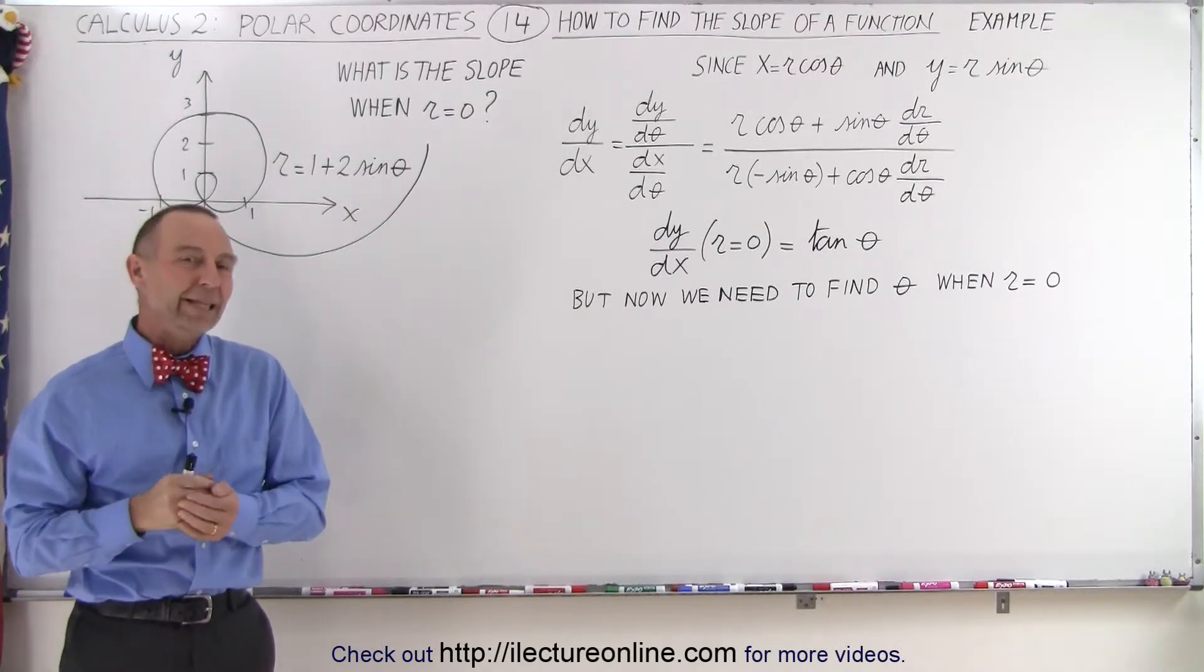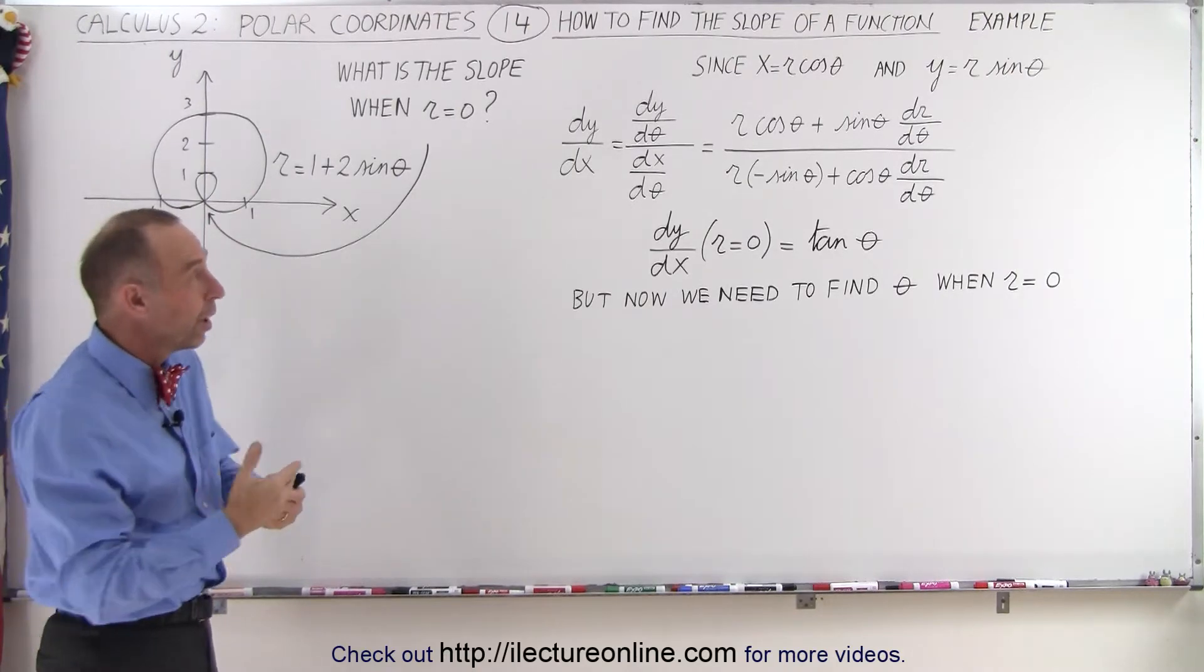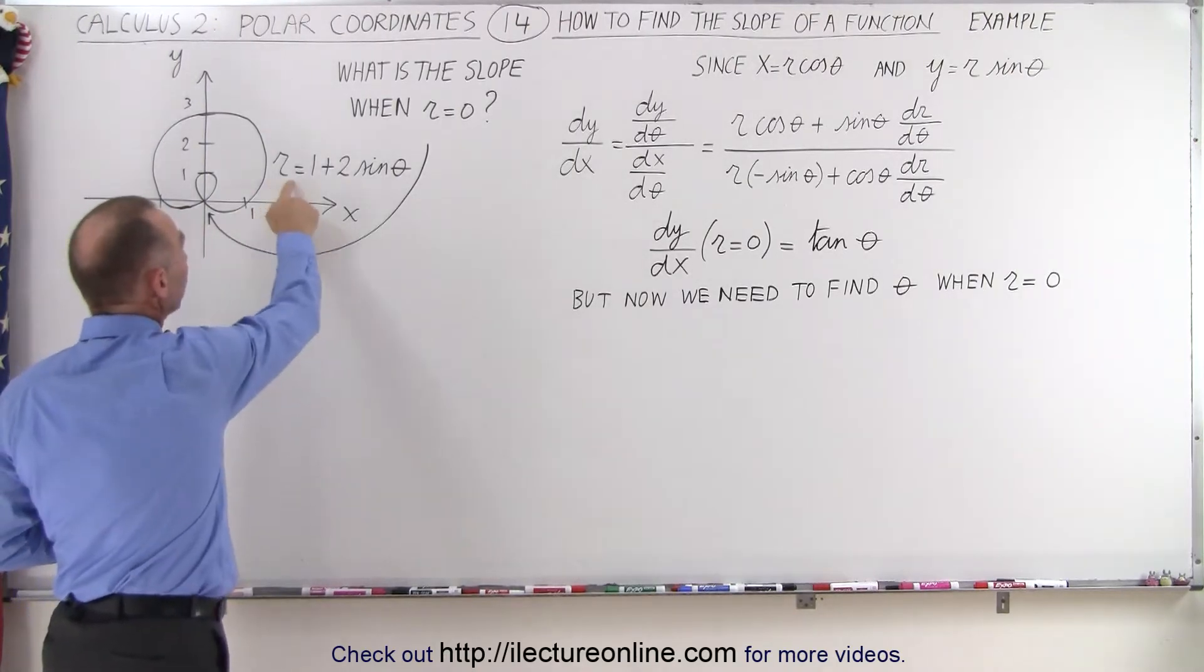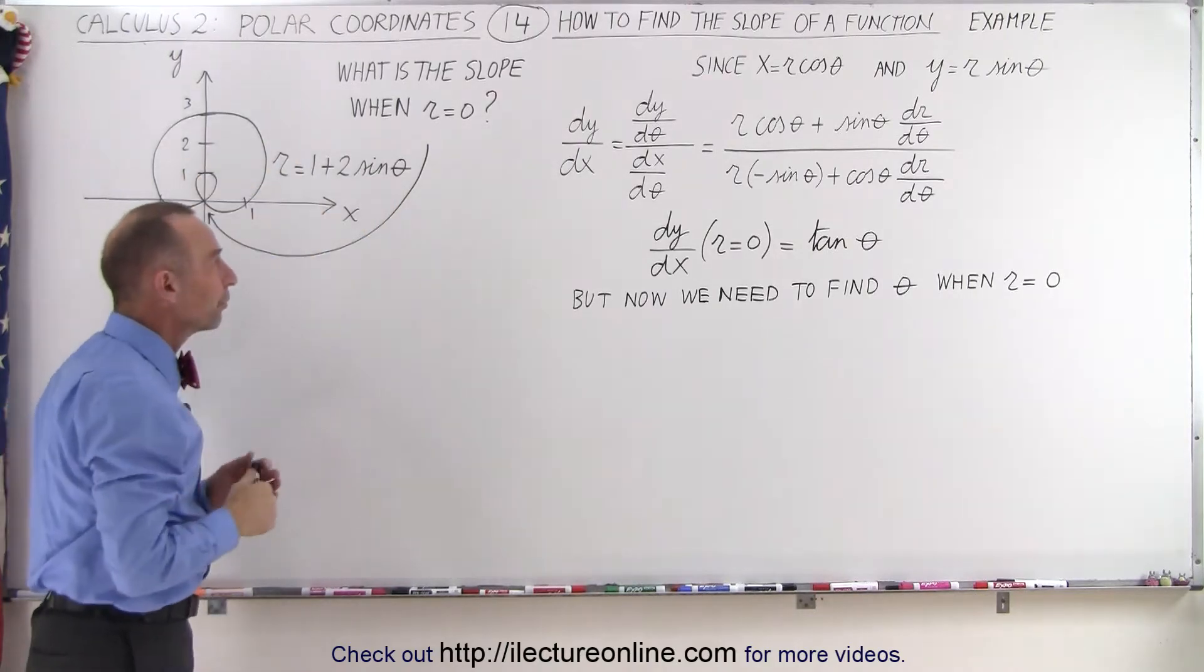Welcome to our lecture online. In the previous video we found the general equation for the slope of the function r equals 1 plus 2 times the sine of theta, which by the way is drawn over here.